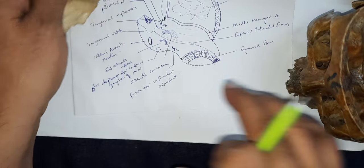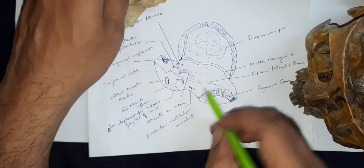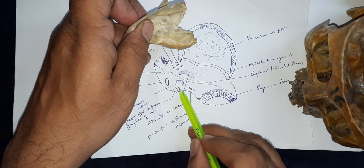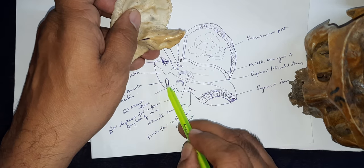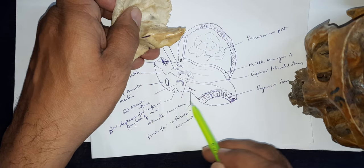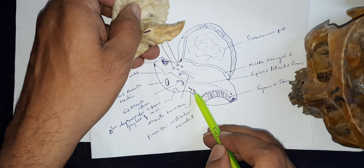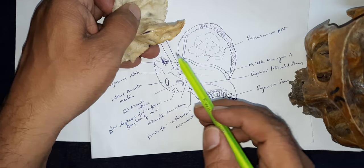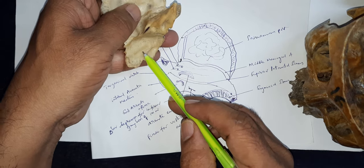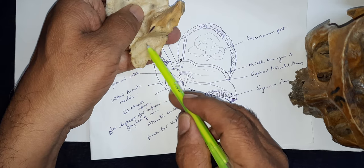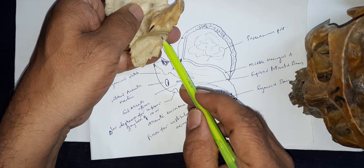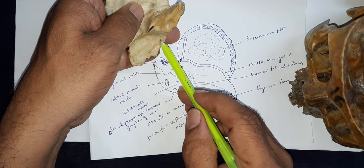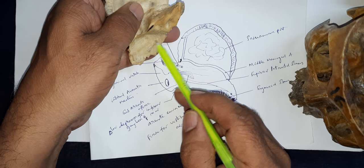In the diagrammatic representation, you can see here: this is the arcuate eminence, this is the subarcoate fossa, this is the internal acoustic meatus, and this is the fissure for the vestibular aqueduct. On the mastoid part, there is a concave depression — this is for the enlargement of the sigmoidal dural venous sinus.